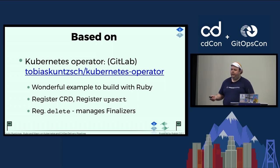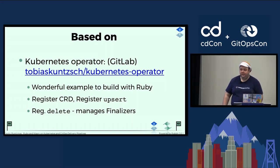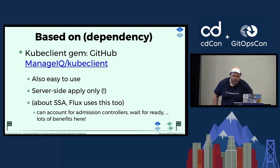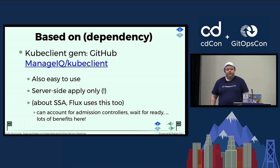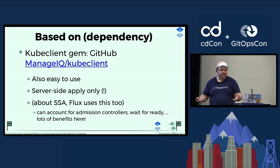Writing an operator in Ruby is actually super easy. This gem has a wonderful example — about one page long. If you've ever tried to learn controller runtime, it's a bit longer than one page. It's based on a library called kubeclient, which works in a delightful way and is well-maintained. The Kubernetes operator gem hasn't been updated since 2021, but kubeclient is maintained. It has server-side apply, which is great — Flux uses server-side apply too. You can apply a Kubernetes YAML and wait for the things in it to become ready before you close your connection, getting a response synchronously.